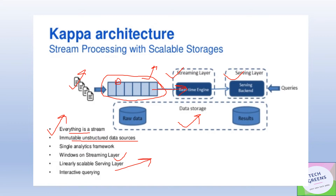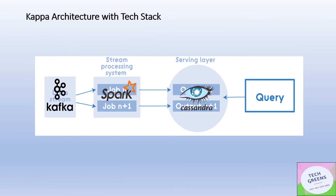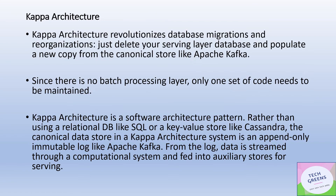Looking at Kappa architecture with a tech stack, it is primarily built with technologies like Kafka. Kafka is used as the streaming source, and stream processing systems in this context use Spark — specifically Spark Streaming or Spark Structured Streaming. The serving layer uses Cassandra or any key-value-based NoSQL system to serve as a data mart.